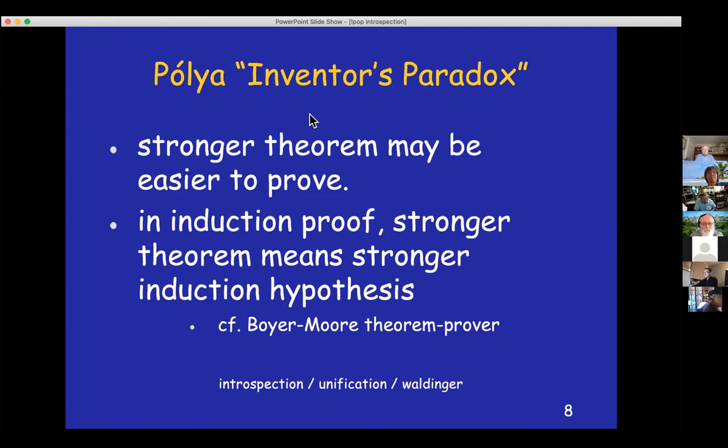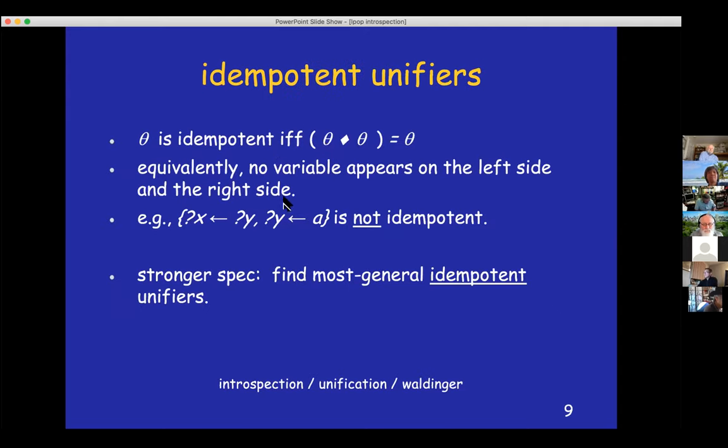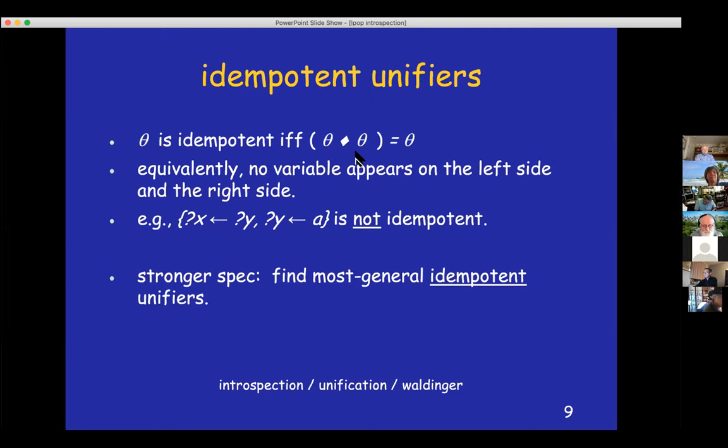Now, in our unification case, we found it necessary to add the condition not only that theta is a most general unifier, but also it is idempotent. Idempotent means that applying the substitution twice has the same effect as applying it once. So, for example, this substitution here is not idempotent because applying it once replaces x with y. Applying it twice replaces that y with a. So, the net effect of doing it twice is to replace x with a, not y. So, doing it twice has an additional effect. So, our stronger specification involves requiring that the substitution be idempotent.